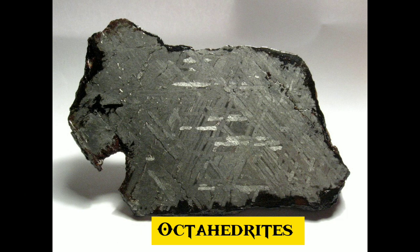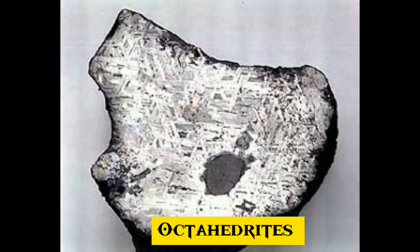9. Octahedrites are the most common structural class of iron meteorites. The structures occur because the meteoric iron has a certain nickel concentration that leads to the exsolution of kamacite out of taenite while cooling.